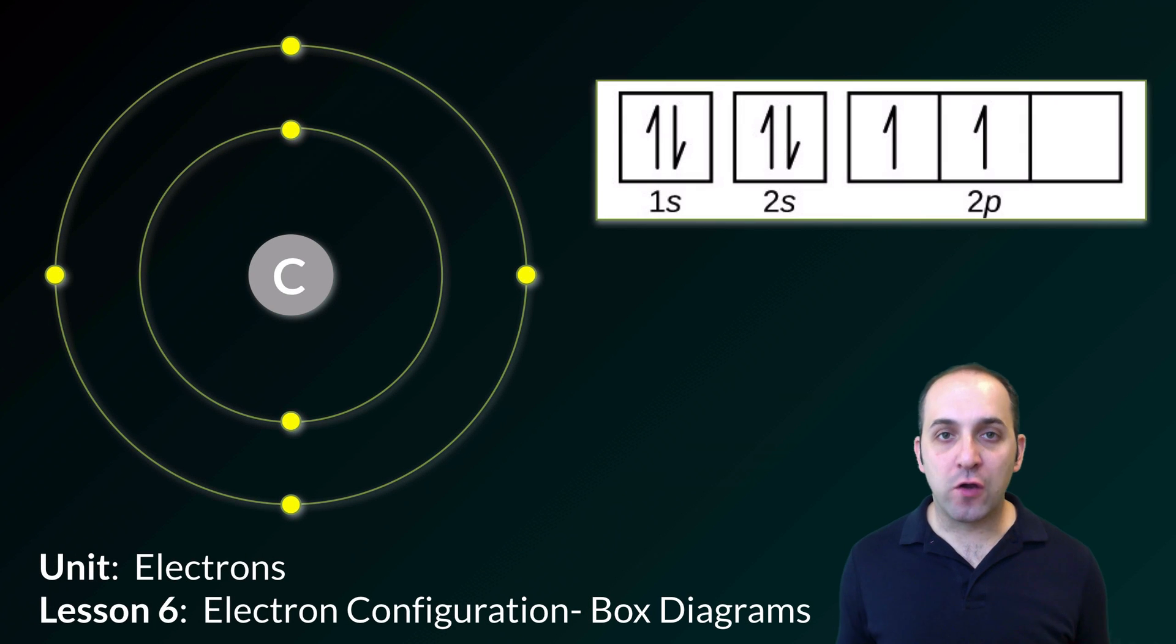Hi, and welcome to Lesson 6 in our Electrons Unit. Here we're going to talk about our last way of representing electrons through what are called box diagrams. Again, here you see Carbon's box diagram up at the top. Let's talk about how this works and what they look like.